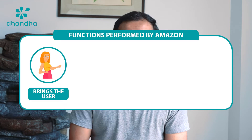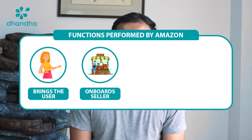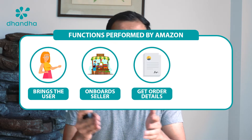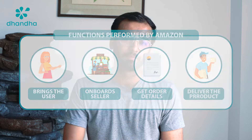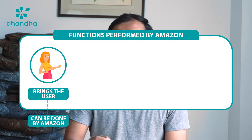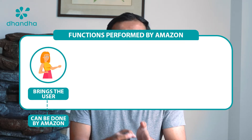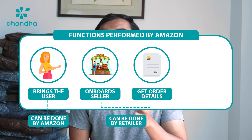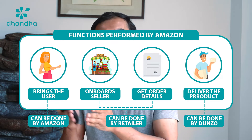Now Amazon in our previous example was performing a couple of different functions: it brings the user, onboards the seller, connects them both, handles all the order details, and finally delivers the product to the customers. Now with ONDC, all these functions are unbundled — meaning divided — and different parties can fulfill each of those functions. The unbundling enables interoperability between different players to efficiently fulfill a single task. For example, bringing the user can be done by Amazon (function 1), while onboarding the seller and handling the order can be done by a local retailer.